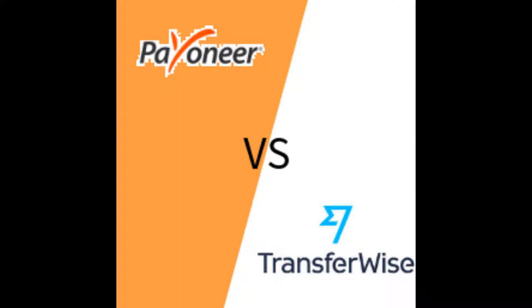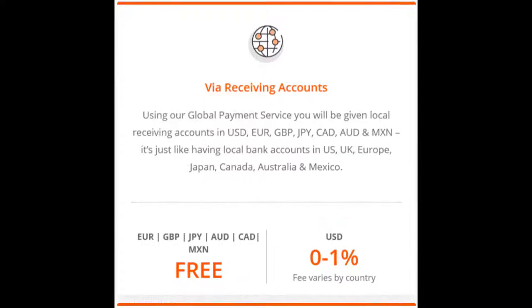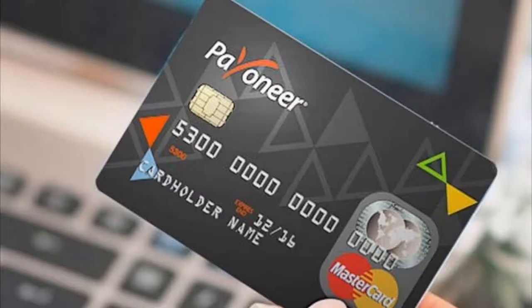Compared to Payoneer, I believe TransferWise is actually better. For example, in Payoneer — this only applies for the U.S. account — whenever you get paid in USD, you get charged a 1 percent fee just for receiving that money. Also, the debit card that Payoneer offers requires one prepaid card for each and every single account.